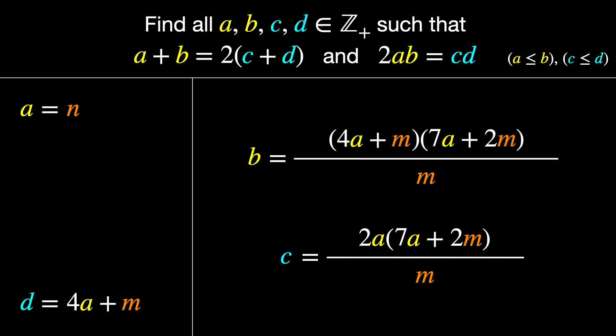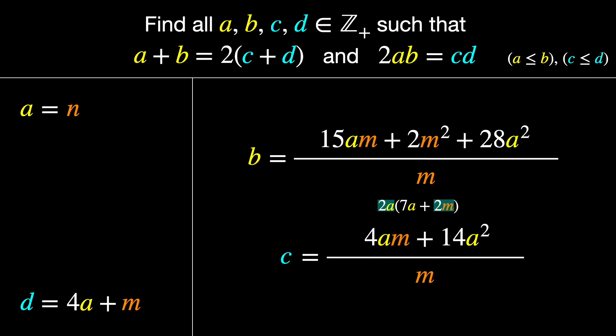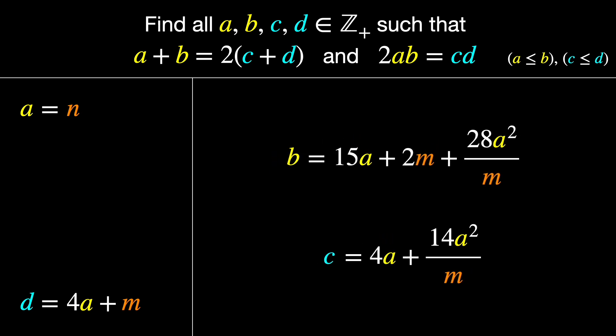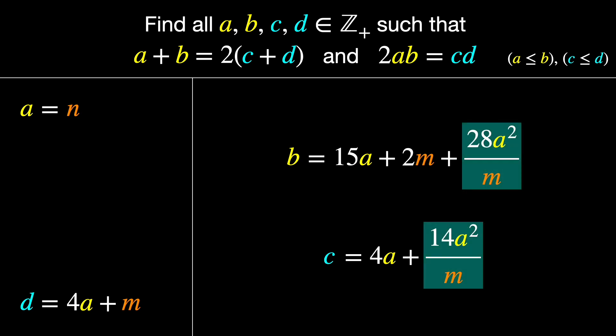Now let's multiply out the numerators. 4A times 7A is 28A squared. 4A times 2M is 8AM. M times 7A gives us another 7AM, which makes 15AM. Then M times 2M is 2M squared. Down below, we get 2A times 7A is 14A squared. And 2A times 2M is 4AM. Now split these up into separate fractions. A bunch of M's cancel. And there we are! We can clearly see that as long as M divides 14A squared, these fractions become integers, and we're good to go.